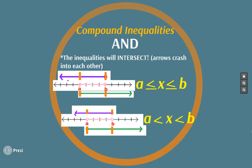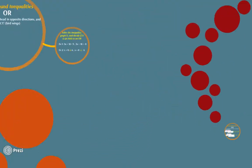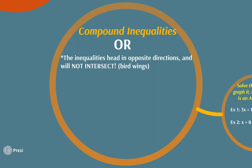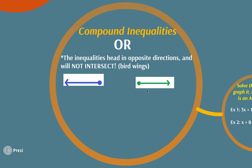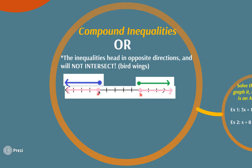The second type of compound inequality is the OR inequality. With OR, the arrows are still traveling in opposite directions, but this time the cars will NOT crash — they will not intersect. One arrow travels this way and another travels that way and the cars don't crash. Your final answer for an OR inequality would be the values over here, which are smaller than a, or the values larger than b — so we actually write 'or' in between.